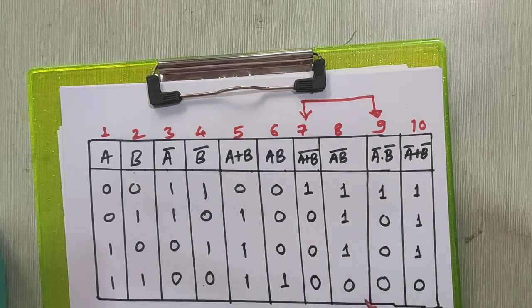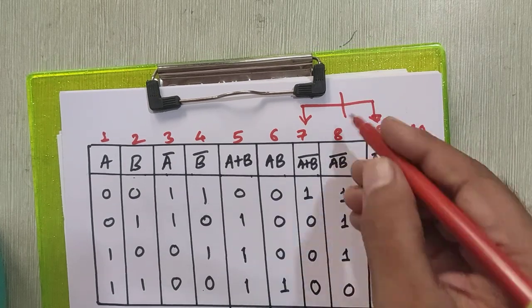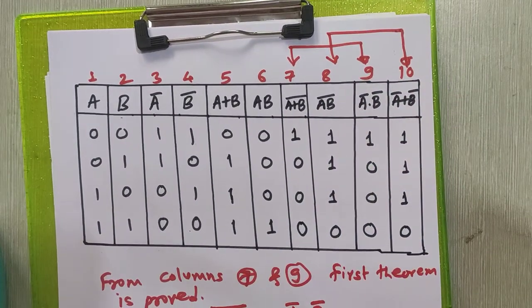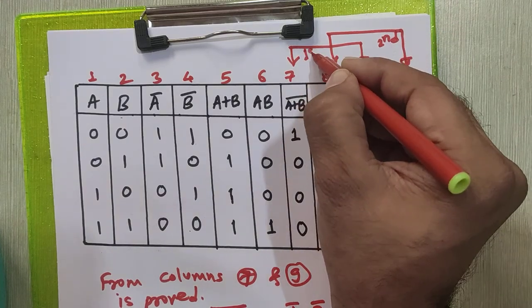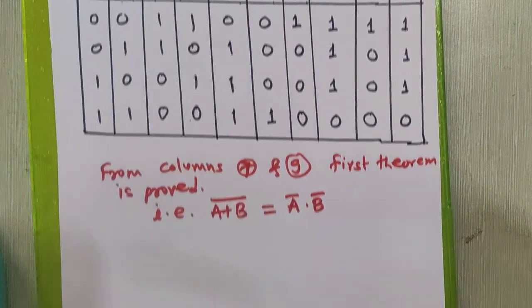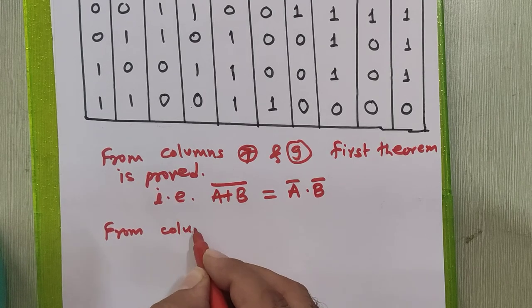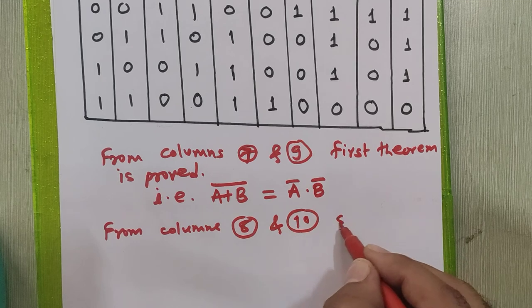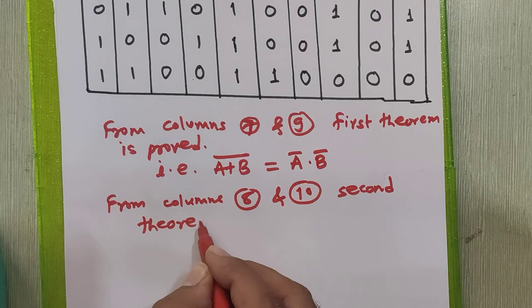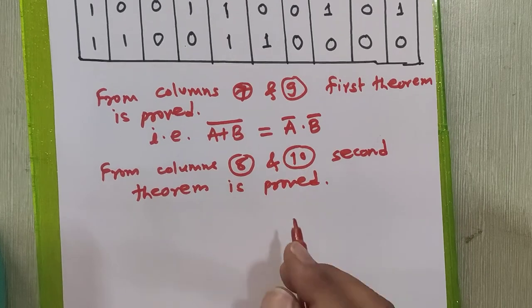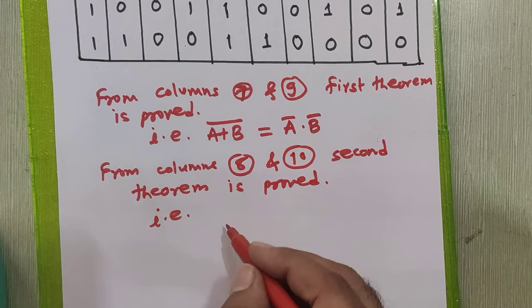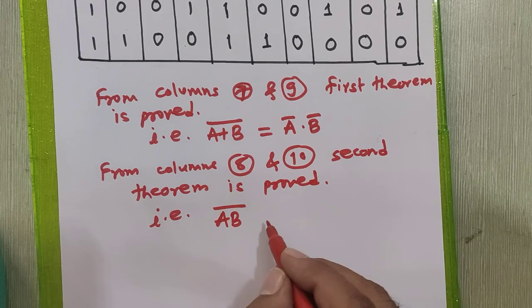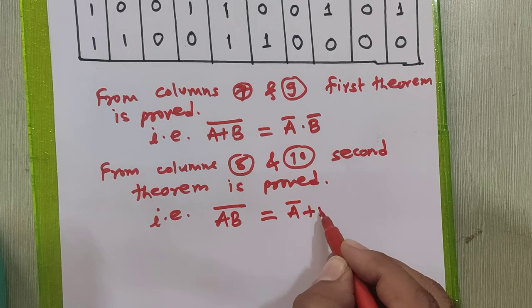From column number 8 and column number 10, the values are the same in both columns. Therefore the second theorem is proved — that is, A into B whole complement equals A complement plus B complement.